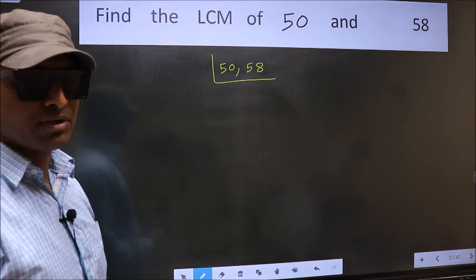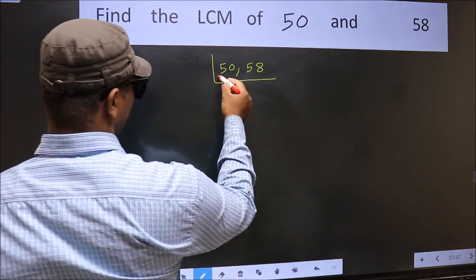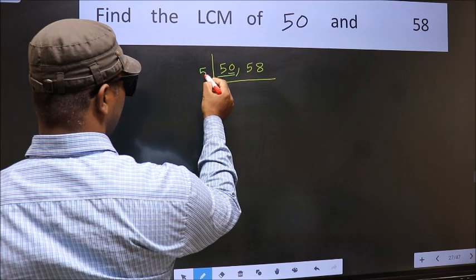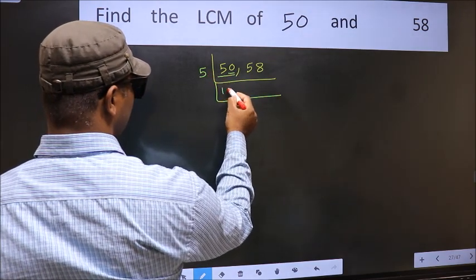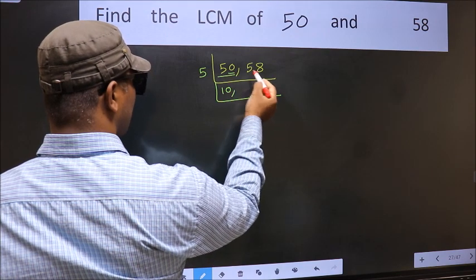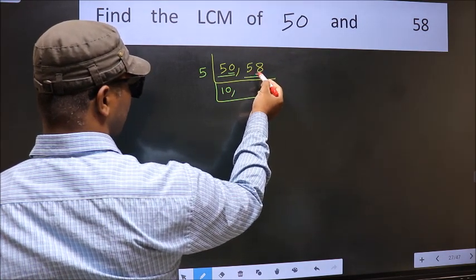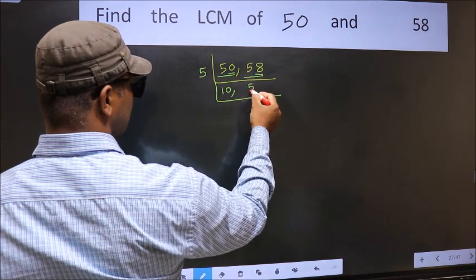Now you should focus on the first number which is 50 here. For this number last digit 0 so directly take 5. When do we get 50 in 5 table? 5 times 10 is 50. Now the other number 58 last digit neither 0 nor 5. So this is not divisible by 5 so we write it down as it is.